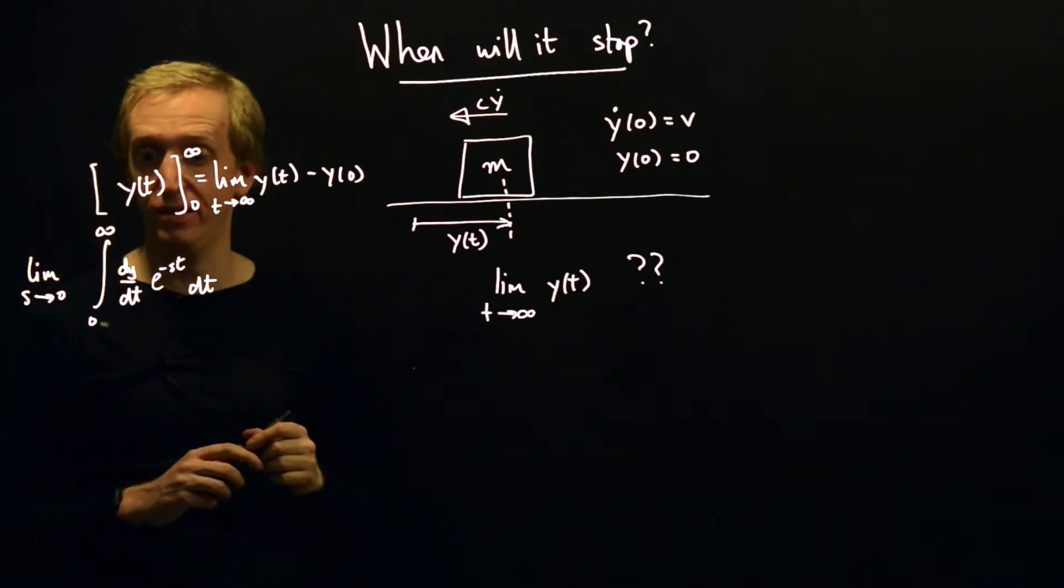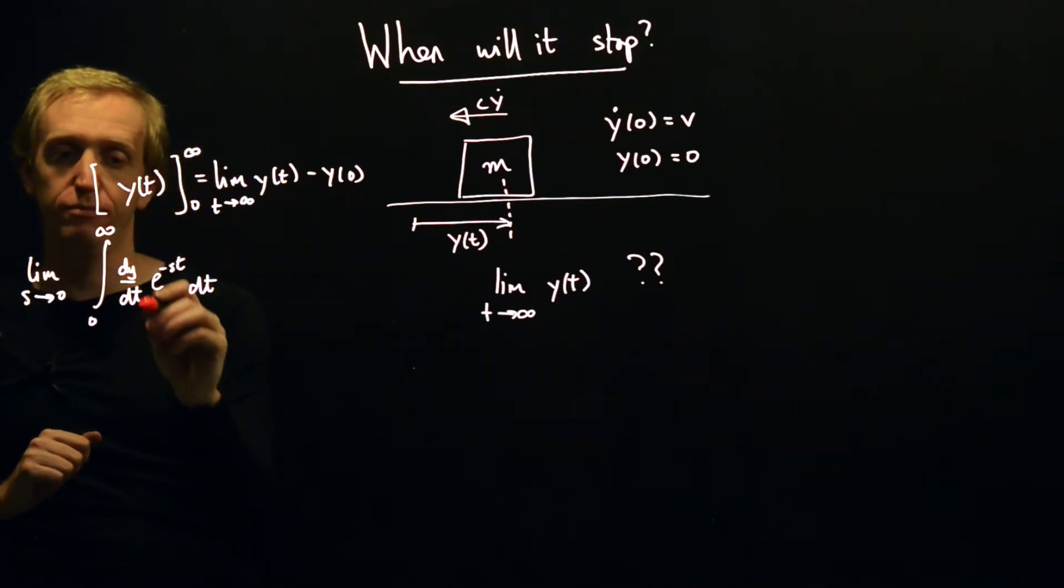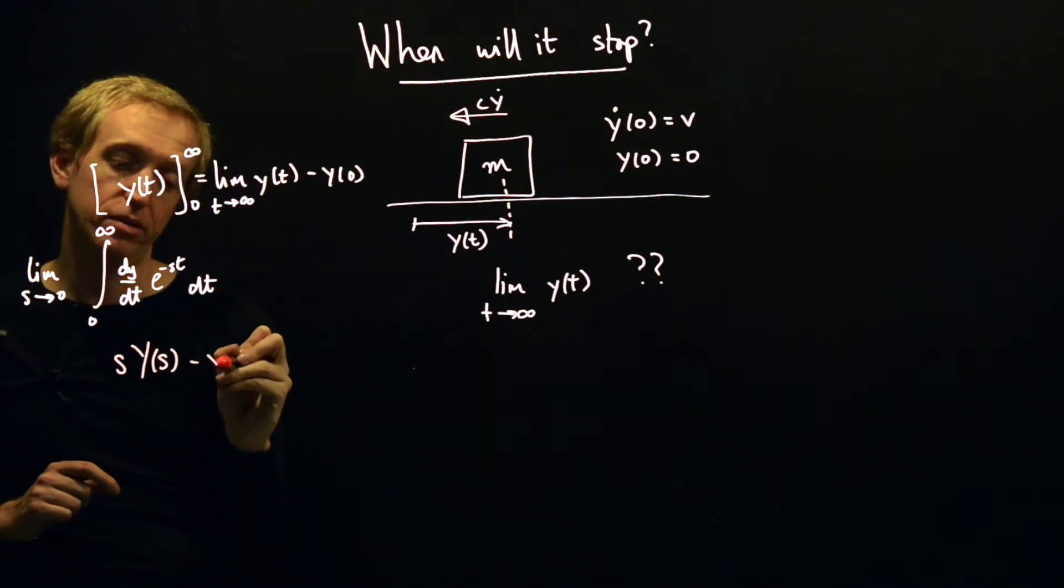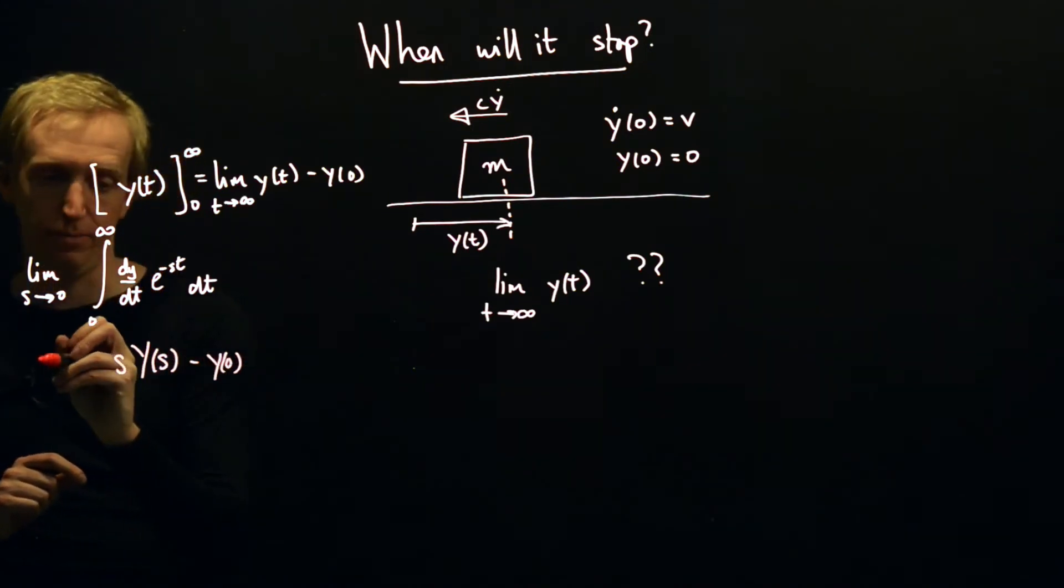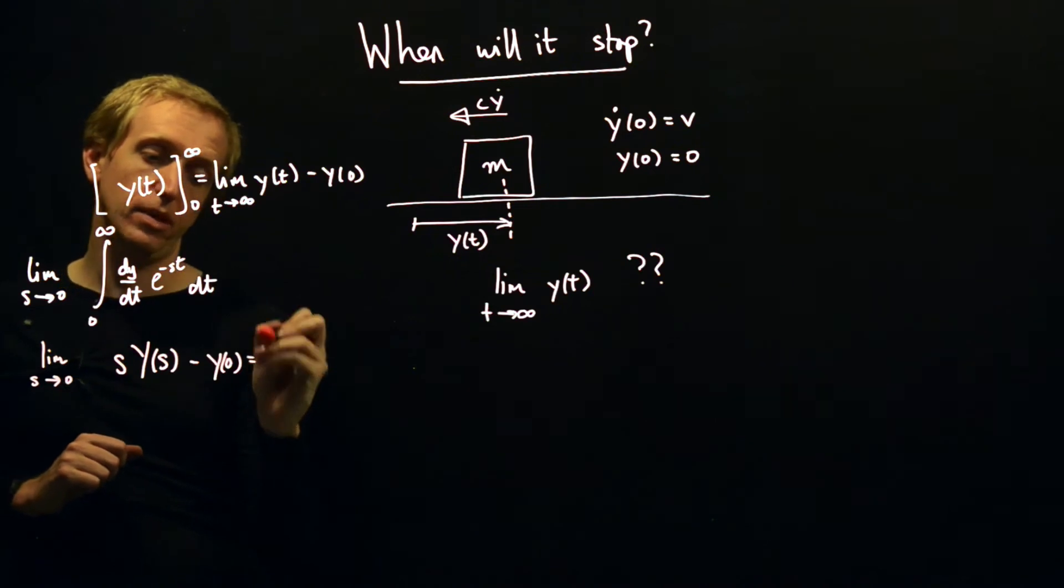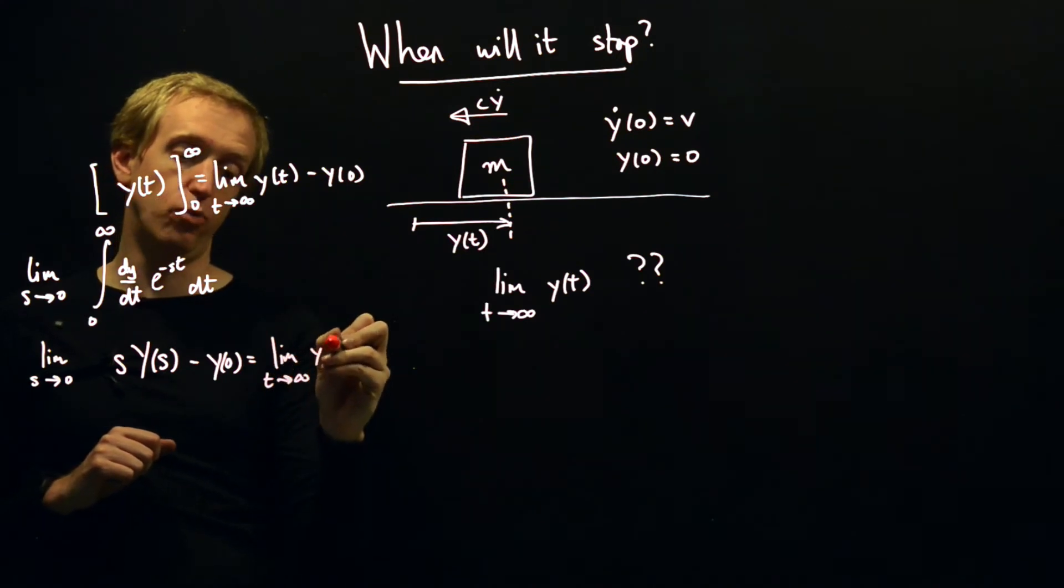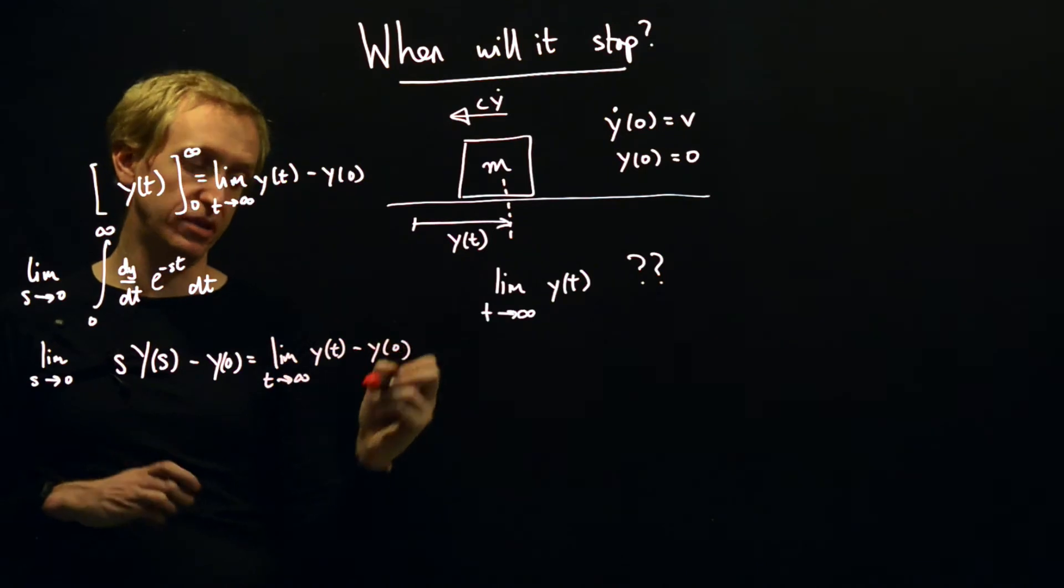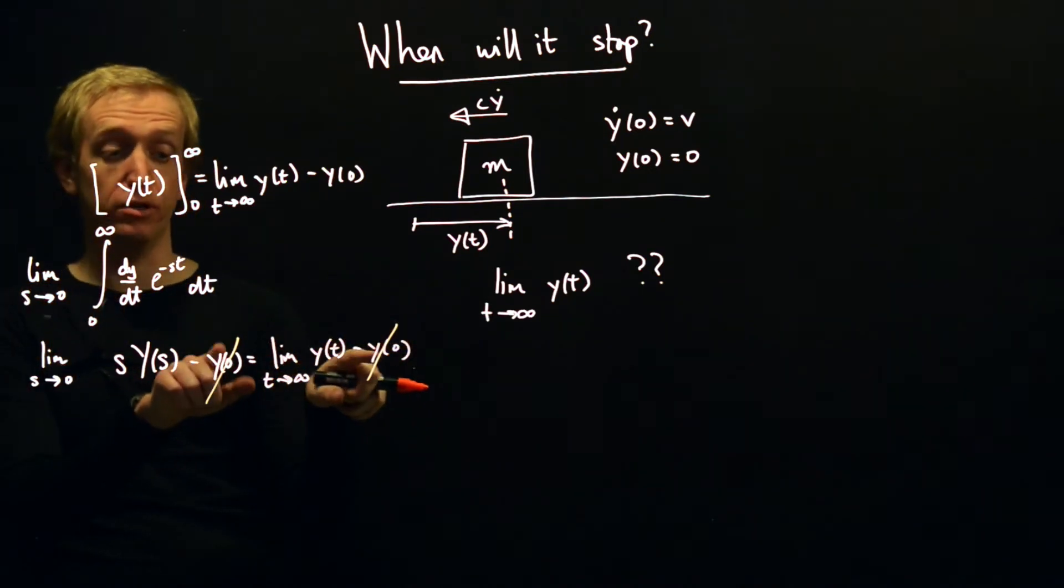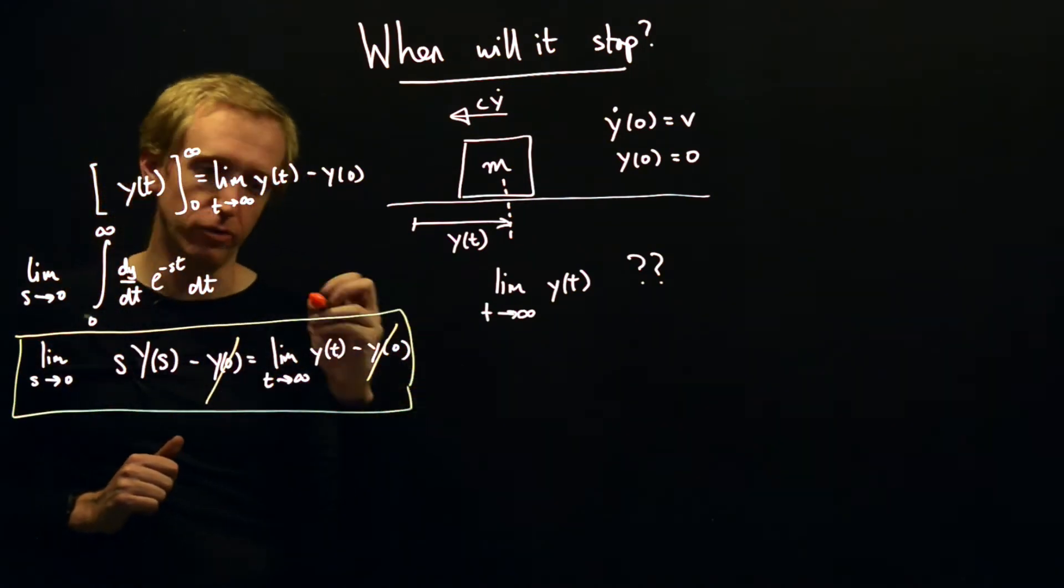So now we've got something that can be Laplace transformed. In fact, we've already seen how to Laplace transform exactly this. So we've seen that this is just the Laplace transform of the derivative of y and that's equal to s times the Laplace transform of y minus y zero. So here we have lim s goes to zero of this is equal to lim t goes to infinity of y(t) minus y of zero. And this is basically the final value theorem. We can just tidy up these y of zeros. They don't depend on either of the limits. So there's no problem doing that. And everything that's left, this is the final value theorem.